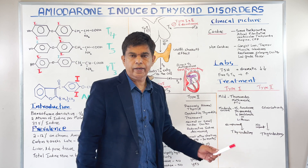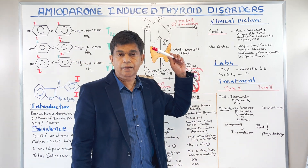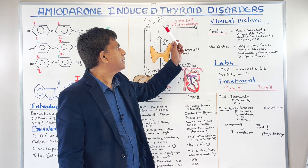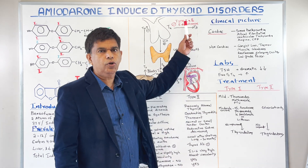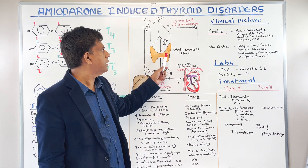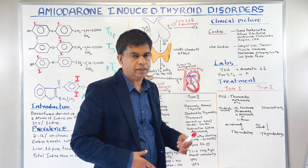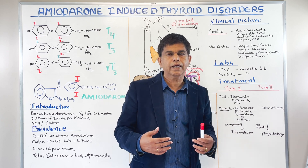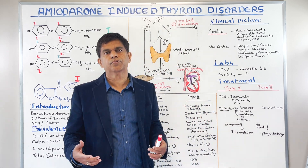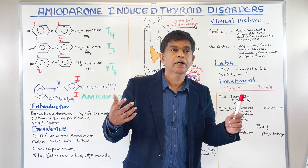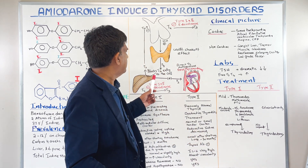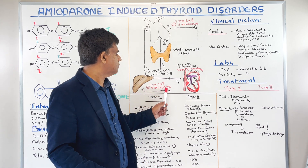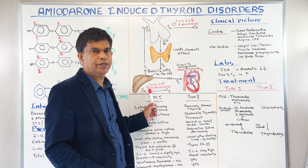Now let's talk about the pathophysiology — what does amiodarone do? To convert T4 to T3, we need type 1 and type 2 5-deiodinase. Amiodarone inhibits that. Then you have the Wolff-Chaikoff effect — when you take lots of iodine, the body has a mechanism to protect itself. They control iodine movement, trying to block iodine for the first two weeks. That is the Wolff-Chaikoff effect. Amiodarone also blocks T4 entry into the cell and in the liver blocks conversion from T4 to T3, so type 1 and type 2 5-deiodinase are again inhibited.